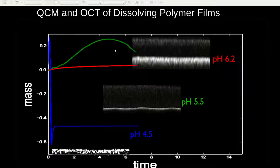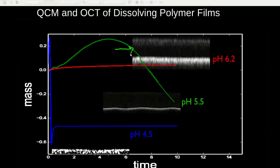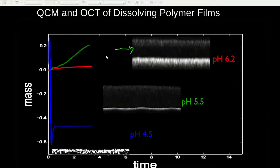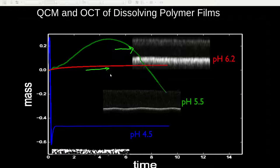At a pH of 6.2, the OCT shows that there is very little change in the polymer film over the duration of the experiment. This is reconfirmed by the QCM measurement which shows only a slight increase in mass as a function of time, which is due to the polymer being swelled by water.